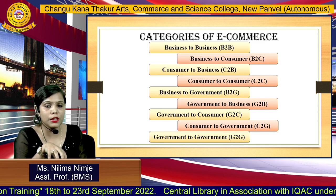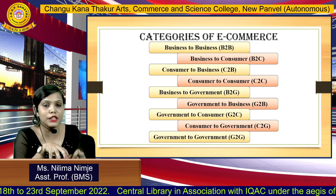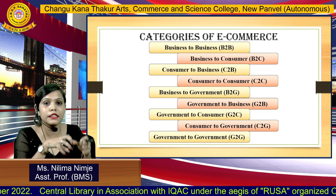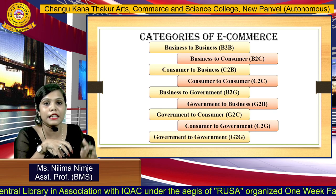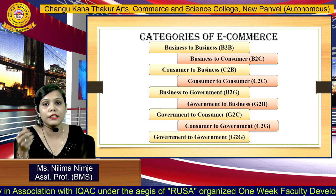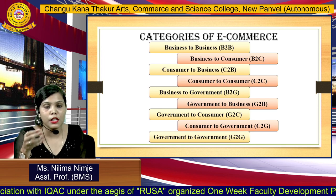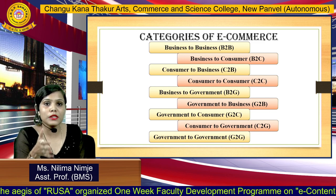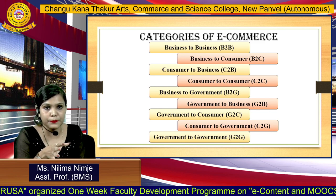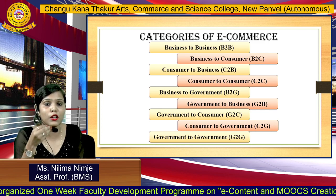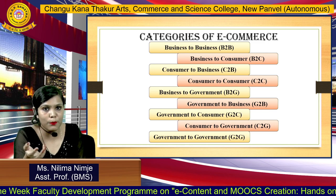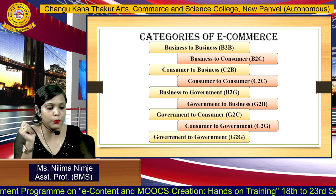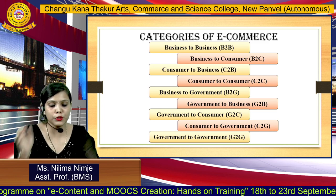Moving towards G2C — Government to Consumer. In this model, the government makes certain services available to the citizens of India. Citizens can access information from government websites at very minimal cost. For example, Indian Railways has the IRCTC website, which consumers use for booking tickets — this is an example of Government to Consumer.